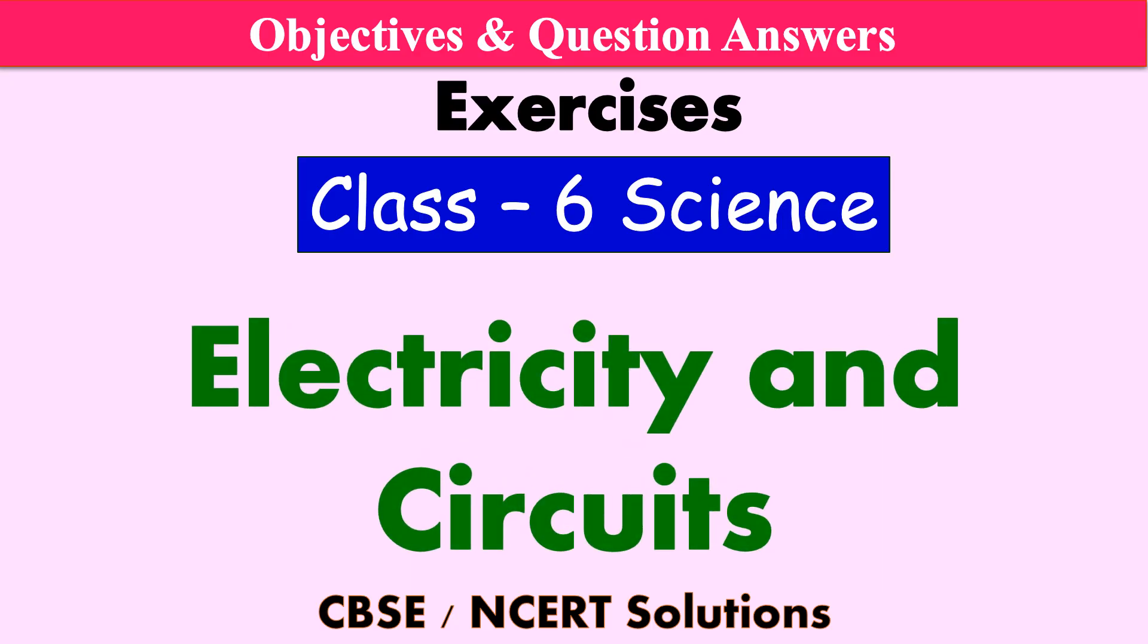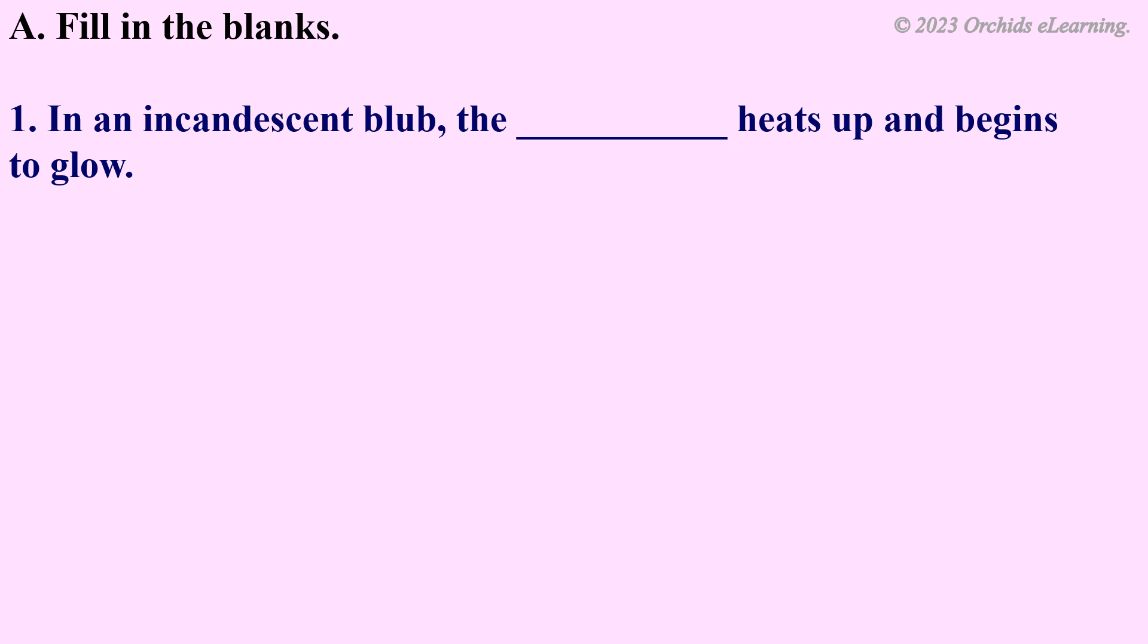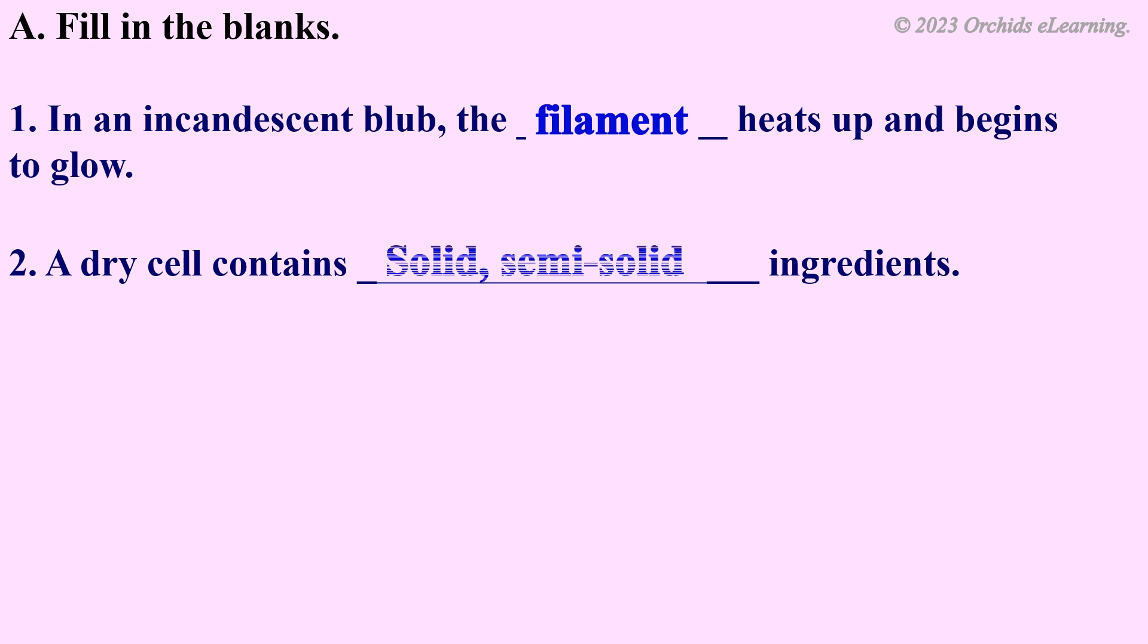Objectives and question answers of the lesson Electricity and Circuits, Class 6 Science. Fill in the blanks. In an incandescent bulb, the filament heats up and begins to glow. A dry cell contains solid or semi-solid ingredients. Electric current...